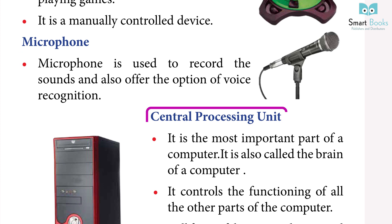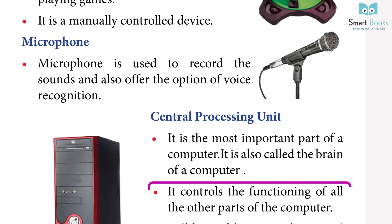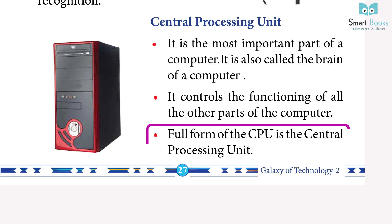Central Processing Unit: it is the most important part of a computer and is called the brain of a computer. It controls the functioning of all the other parts of the computer. The full form of CPU is Central Processing Unit.